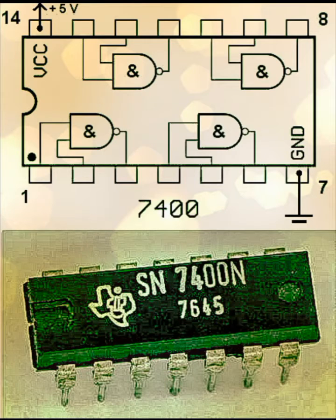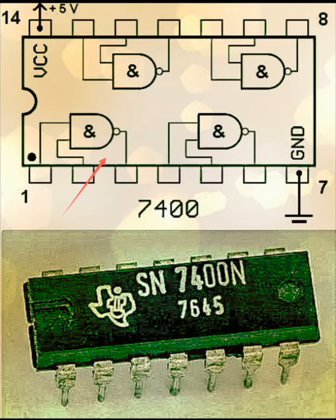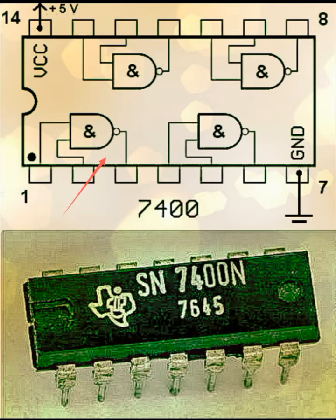Quad means inside this IC there are four such logic units of NAND gates. Here you can see a schematic of what is inside this part — there are four gates: one, two, three, and four.